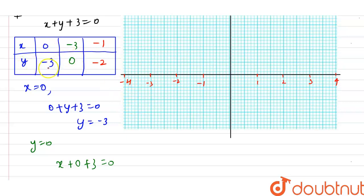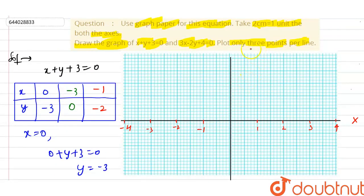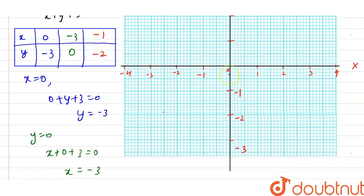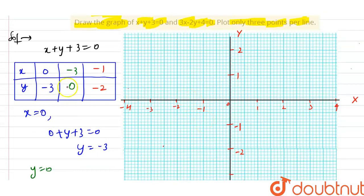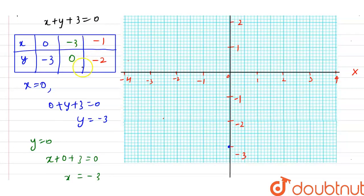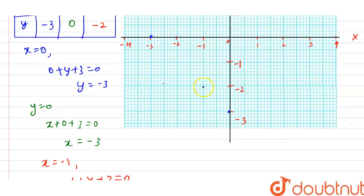Now I'm going to plot the points. The first point is (0, -3) on the y-axis. This is my x-axis and this is my y-axis. The axis markings go from -3 up to 2. The point (0, -3) is plotted here, (-3, 0) is plotted here, and (-1, -2) is plotted here. Joining them gives the line for x + y + 3 = 0.